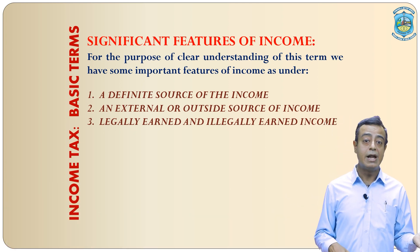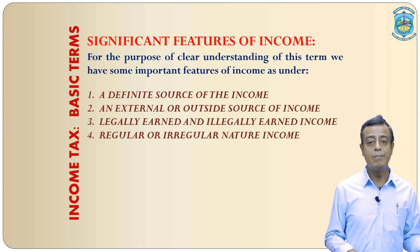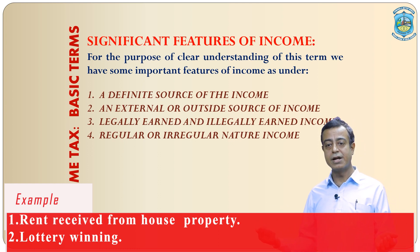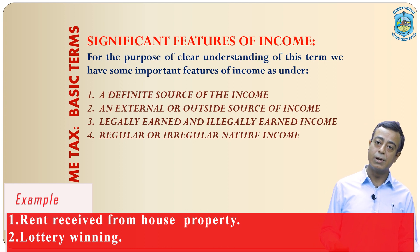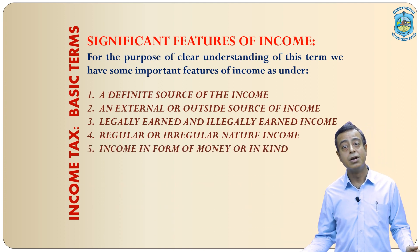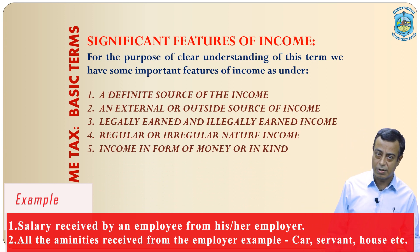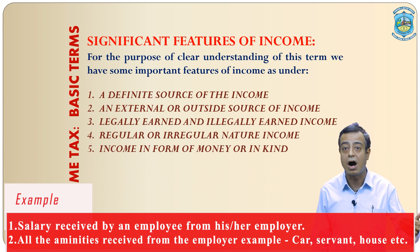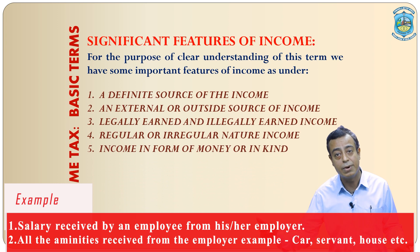Fourth point: whether income is regular or irregular does not matter — both types of income will be taxable. For example, rent received from house property is a regular income, definitely taxable. And lottery winning is irregular income, but it is also taxable under income tax act. Fifth: income can be in money or in other kind. For example, an employee receiving salary in the form of cash or cheque from his employer is definitely taxable. And all the amenities he is receiving from employer, such as the facility of a car, servant or free bungalow, these facilities are also taxable in kind.